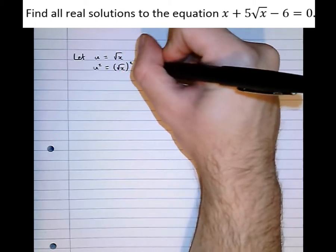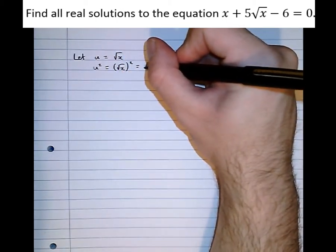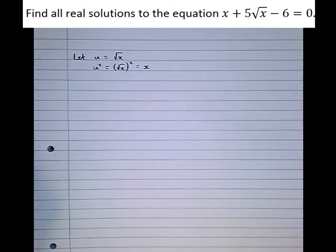well the root of a number times itself is just that number without the root, equals x. So there we go, we've got u equals root x which means that u squared equals x.